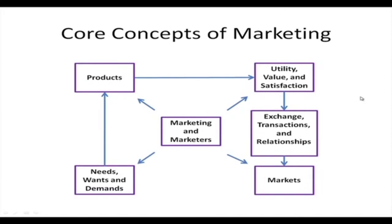The core concepts of marketing revolve around five areas. First are the customer's needs, wants, and demands. To satisfy them, those who market their products design their offerings. A product has certain utility for users, provides value, and satisfies the customer through exchange in the market. Thereby a transaction takes place, a relationship grows, and the company enters the market — that is the job of marketing.